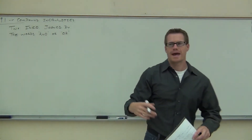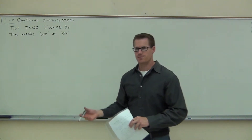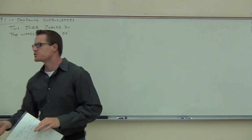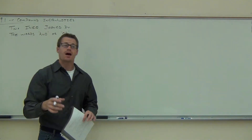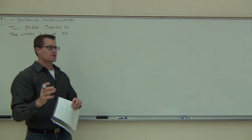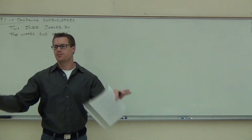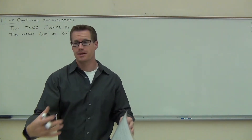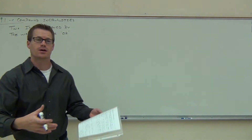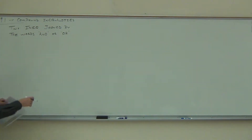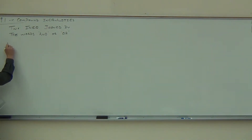We're going to look at the 'and' inequality first — kind of discover what that means and do some problems about it. Then we'll look at 'or.' These two will lead us through our whole entire chapter. We're going to be dealing with compound inequalities joined by 'and' or 'or.' So let's look at 'and.'